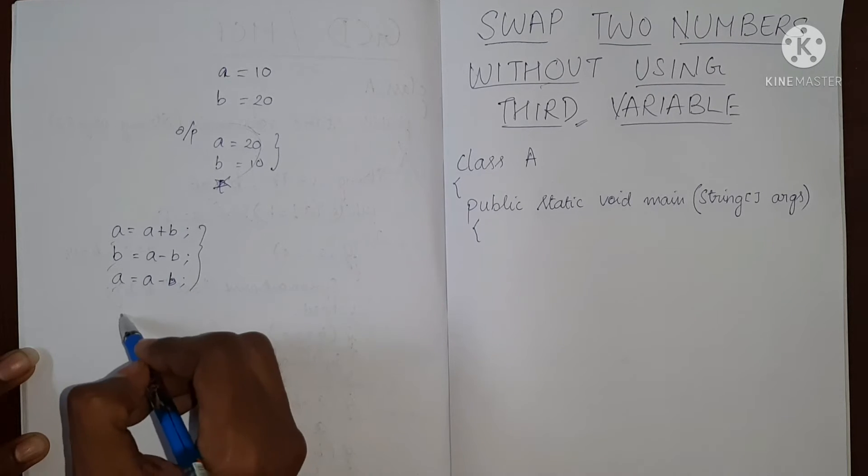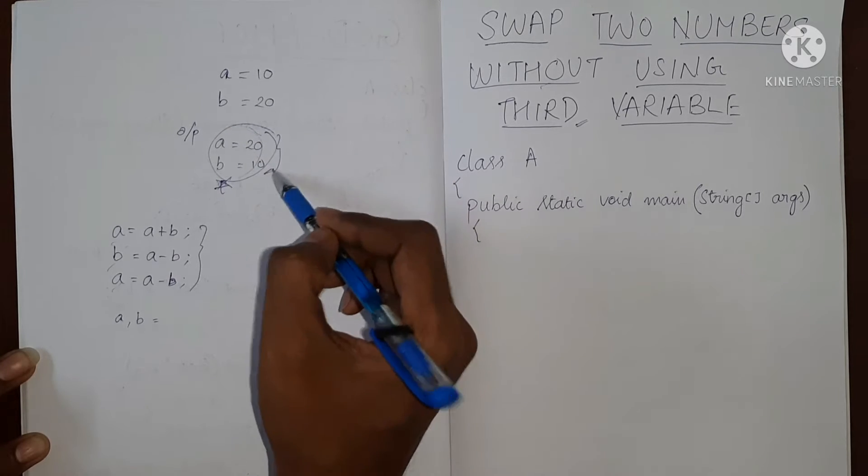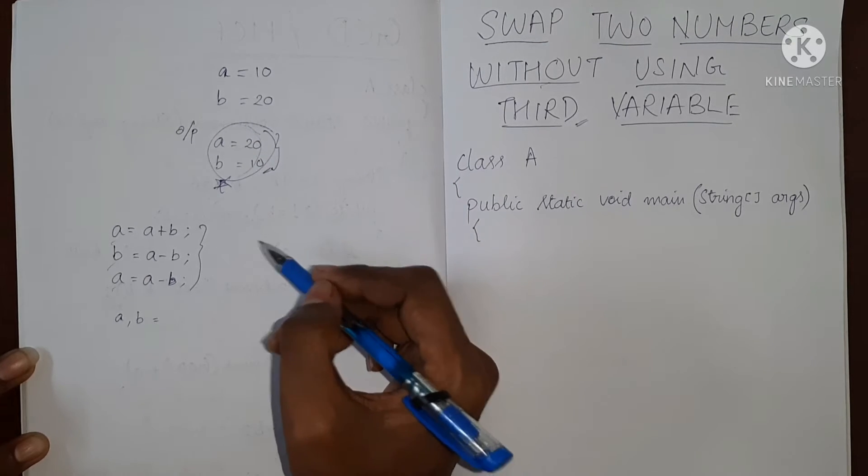So now if you print a and b, it will give us the swapped values. So let me explain how this actually works.